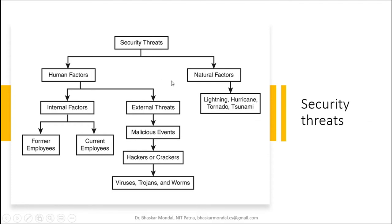Security threats are classified into different higher-level classes: human factors and natural factors. Natural factors are basically physical things — natural disasters like lightning, hurricanes, tornadoes, tsunamis, and all these things. On the other hand, human factors are very difficult to handle, difficult to detect, and you can't simply say you will have no human interaction with your systems — you have to interact with your data, assets, and systems.